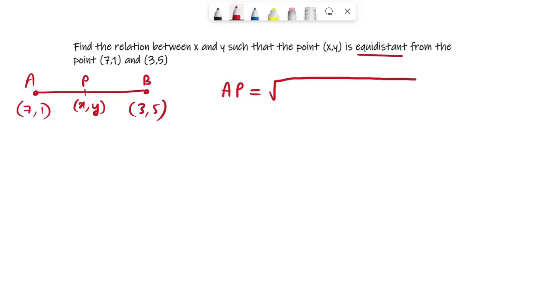Now how will you find AP value? You will find it with the help of the coordinates of P and A. So in this case, x₂ will be x and x₁ will be 7. Then you have √[(x-7)² + (y-1)²]. Opening the square gives x² + 7² minus 2 times x times 7, which is minus 14x. Next you have y² + 1² minus 2y.